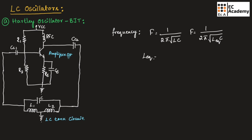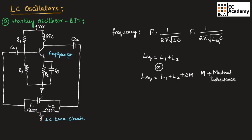The equivalent inductance L_eq equals L1 + L2, or if mutual inductance is present, L_eq = L1 + L2 + 2M, where M is mutual inductance. If mutual inductance is not given in the problem, use L_eq = L1 + L2. In that case, the frequency of oscillation F = 1 / (2π√((L1 + L2) × C)).